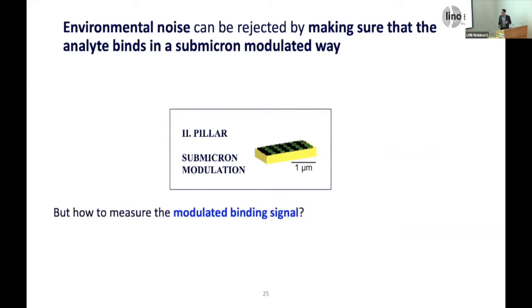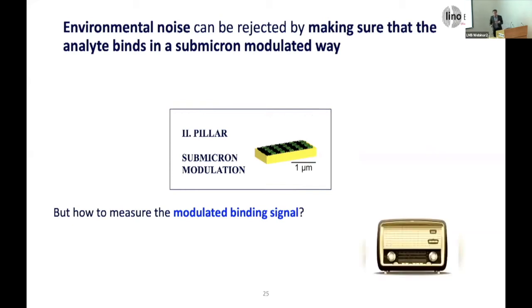The problem is how to measure this. If you have a large sensor spot, you would need to sample it with extremely high resolution. But as is well known from radio transmission — which the entire internet is based on — if you modulate something you can also demodulate it. The only difference is that radio does it in time, not in space, and we do it in space, not in time. If you want to transmit something in a noisy environment, you need to modulate it.